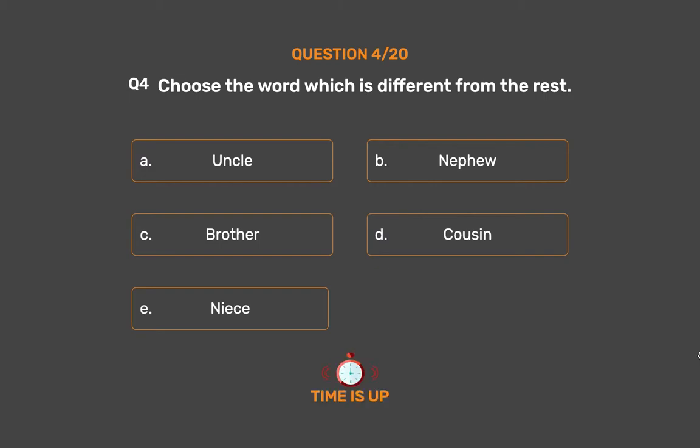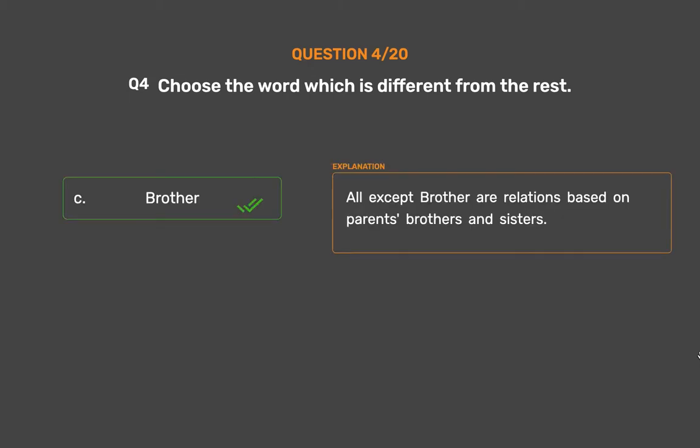The correct answer is Option C: Brother. All except Brother are relations based on parents, brothers and sisters.